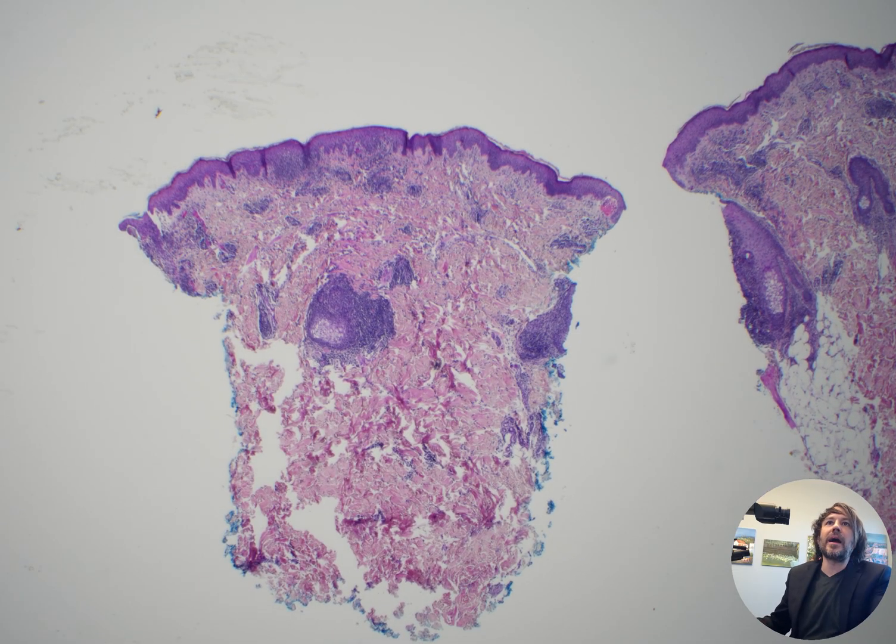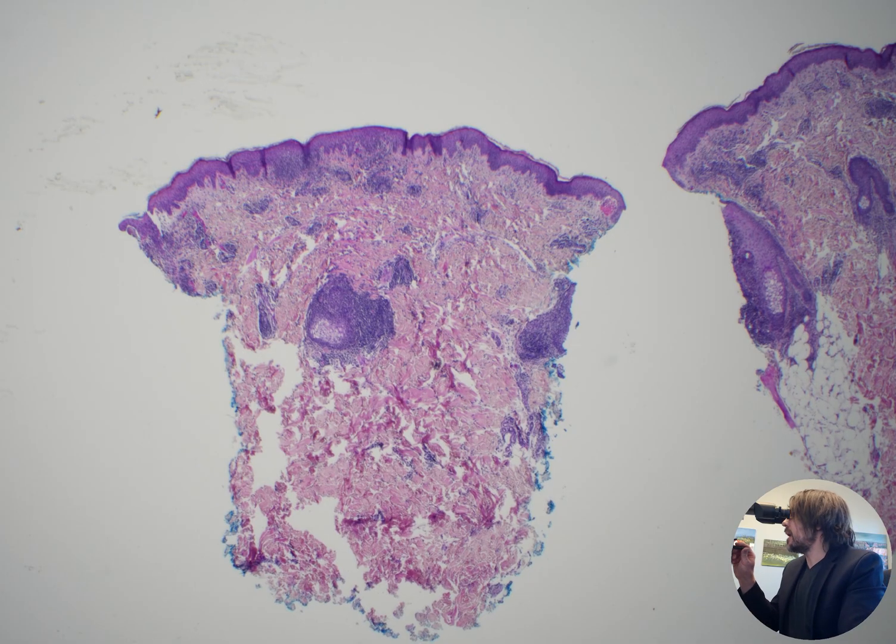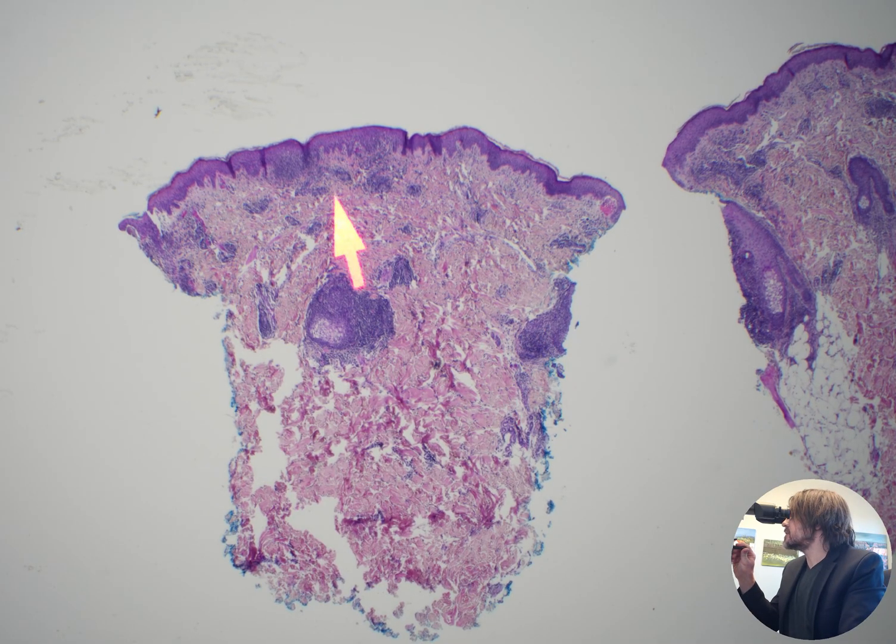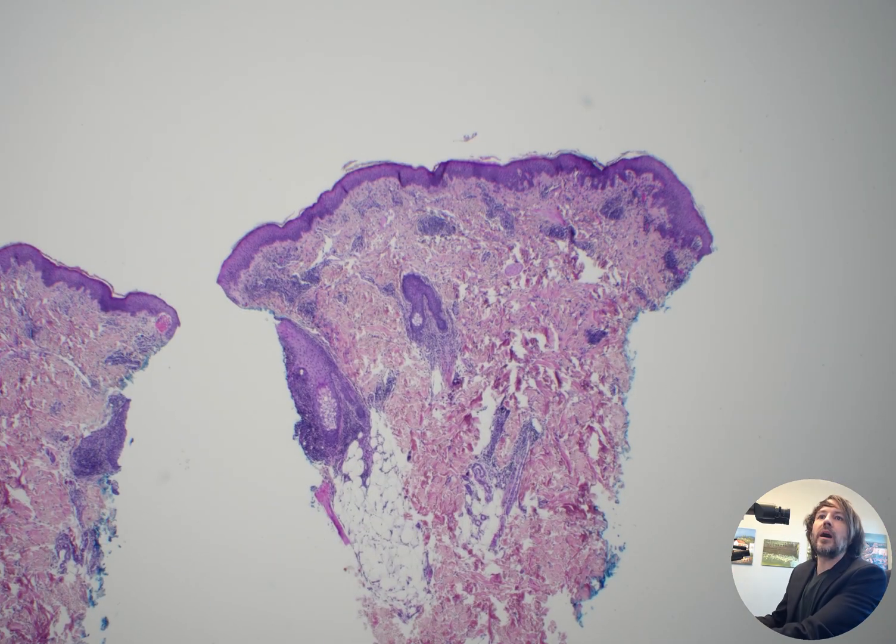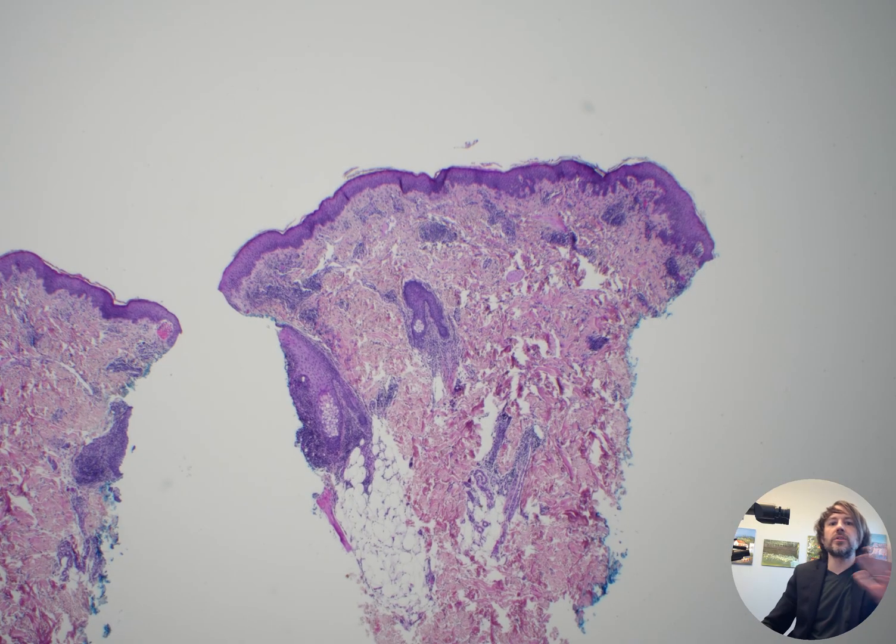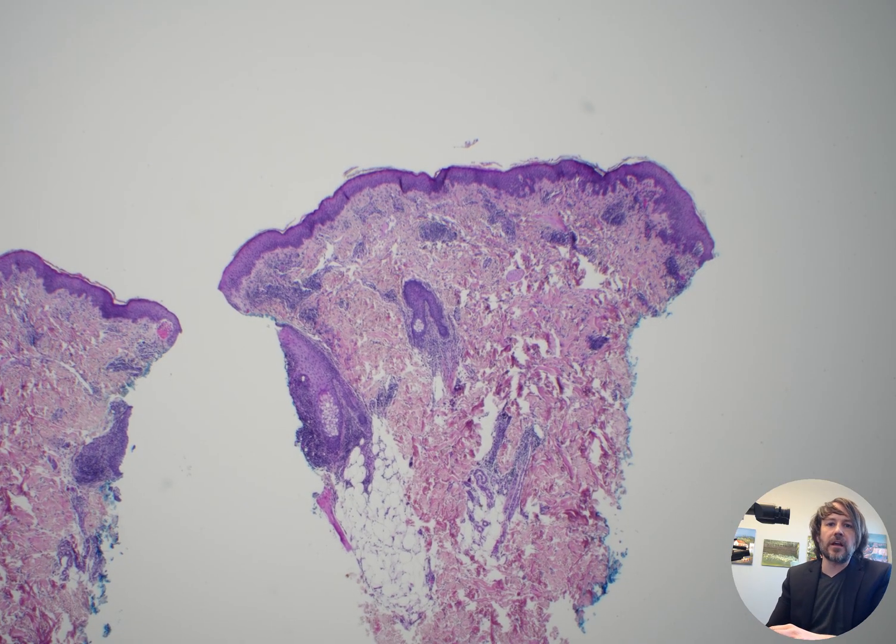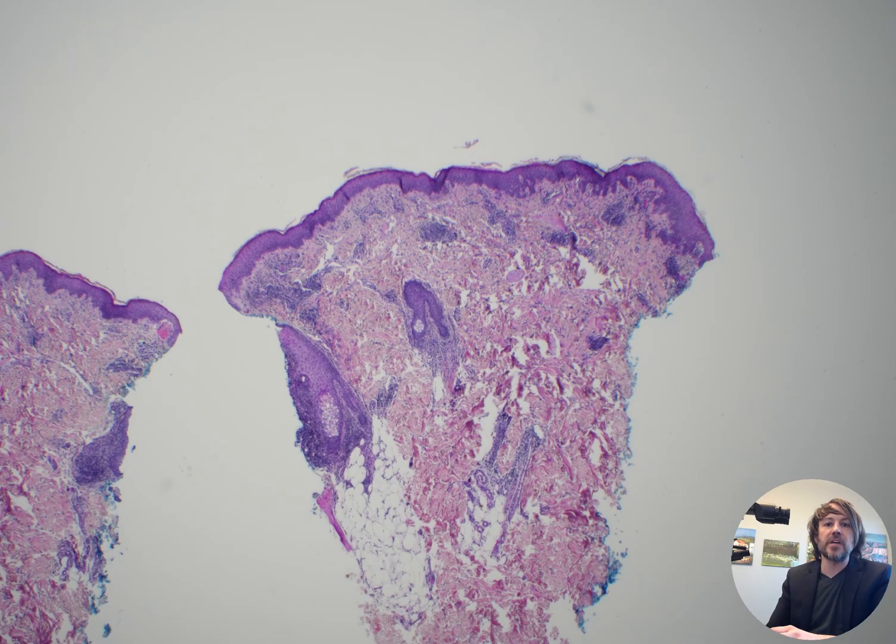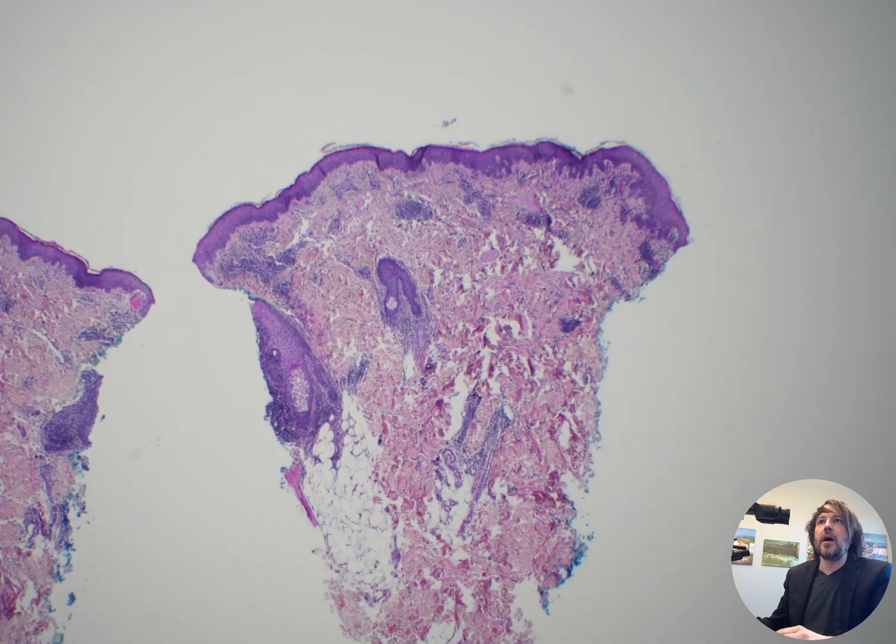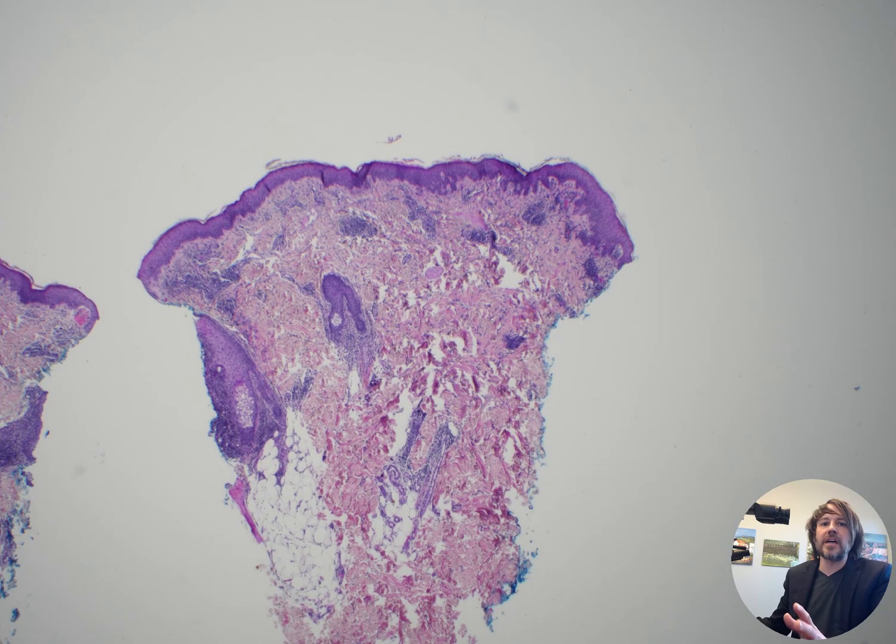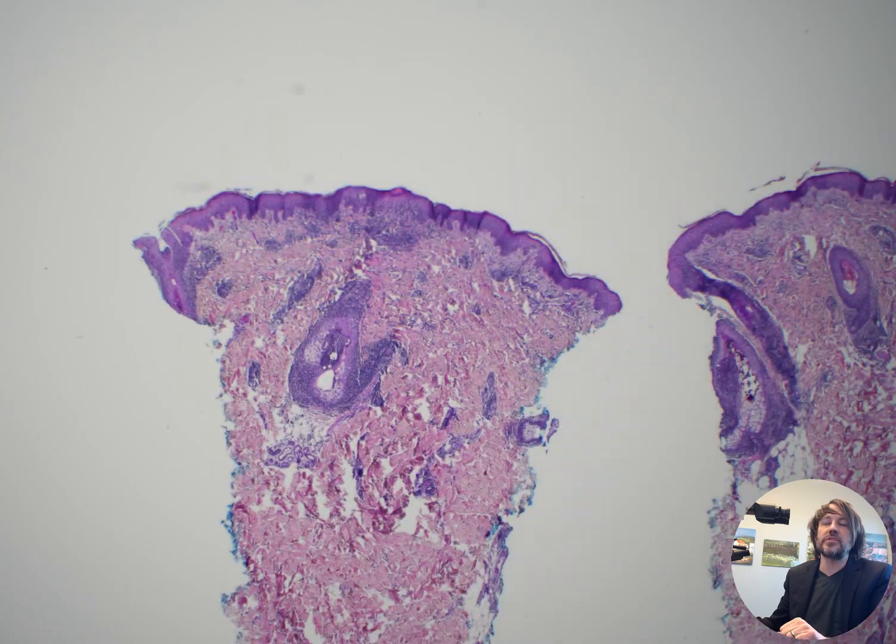And when I first put the biopsy down, you can see there's a lot of inflammation around hair follicles and sebaceous glands. And there's also some spongiosis and inflammation up here, some edema.